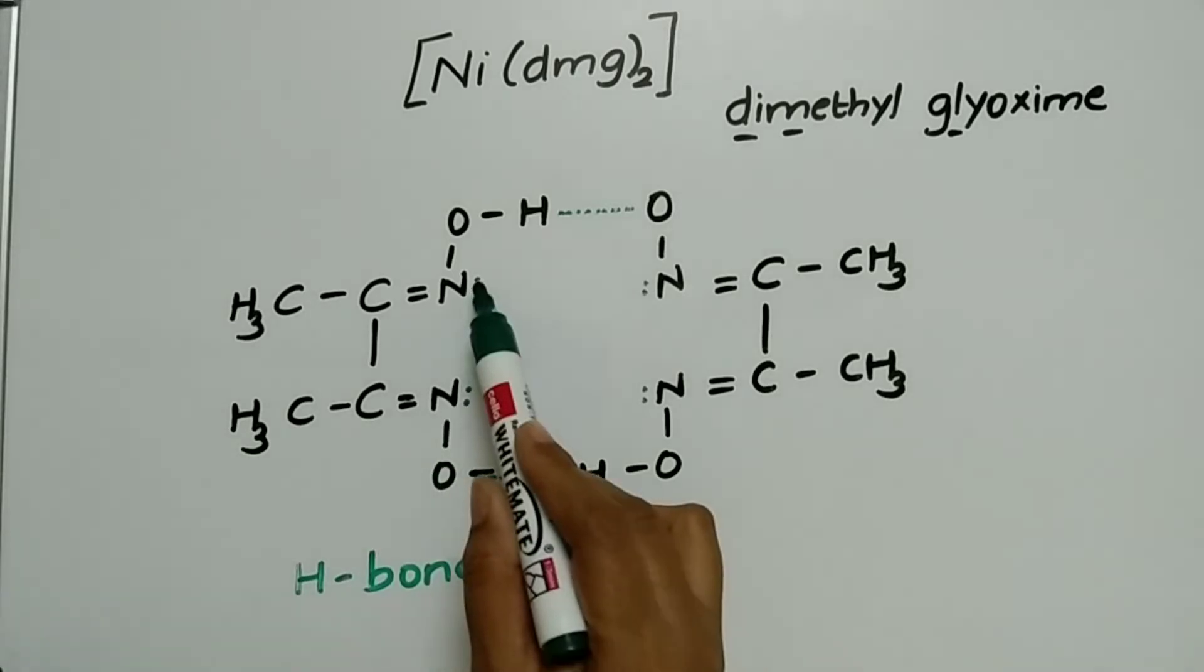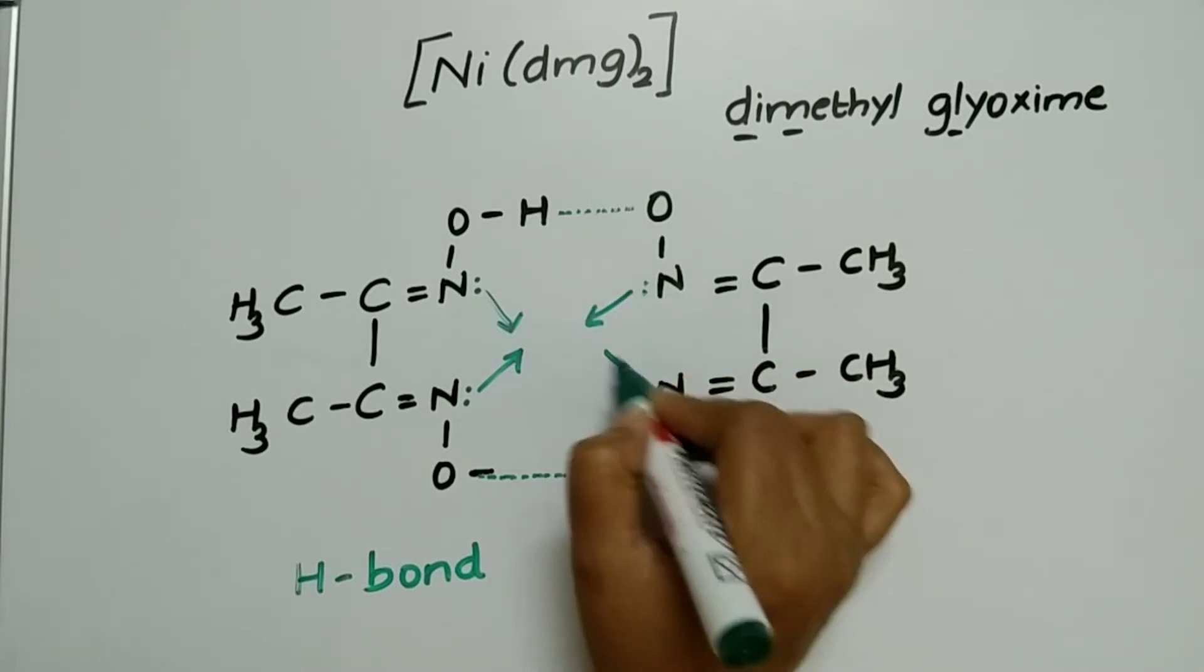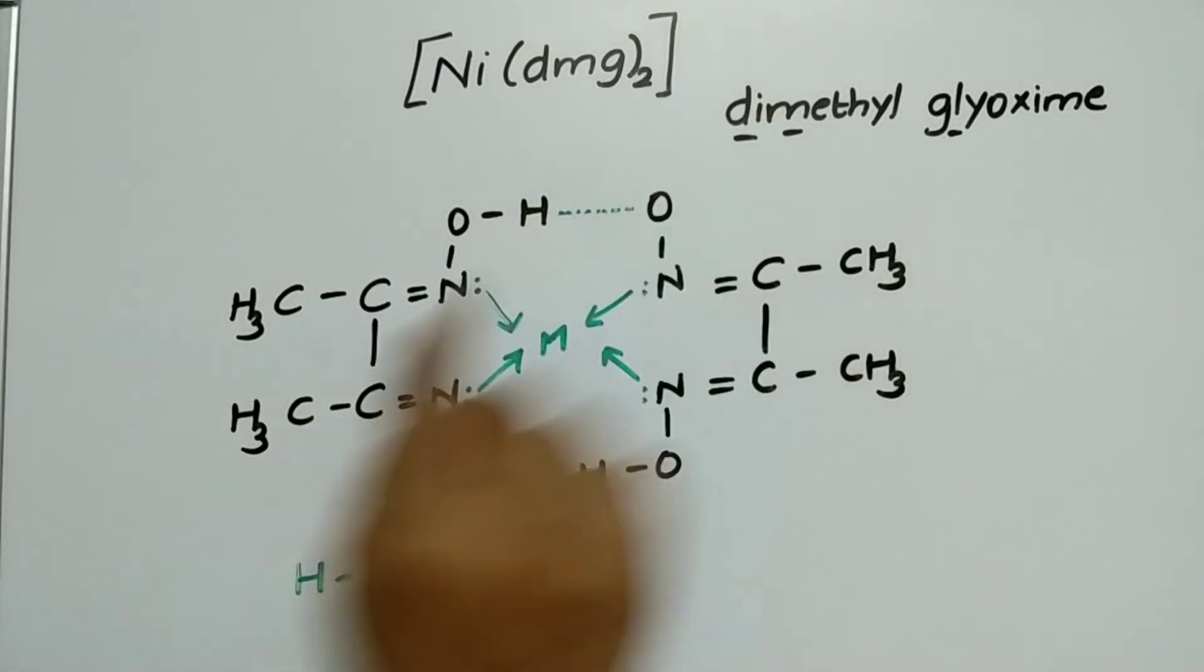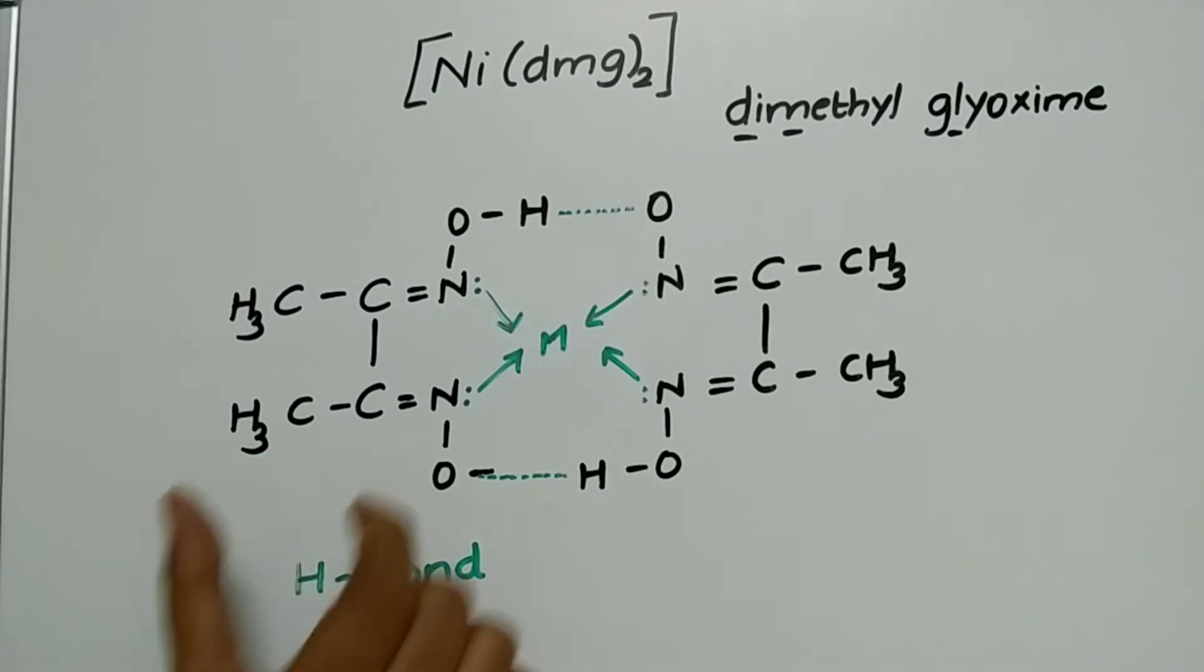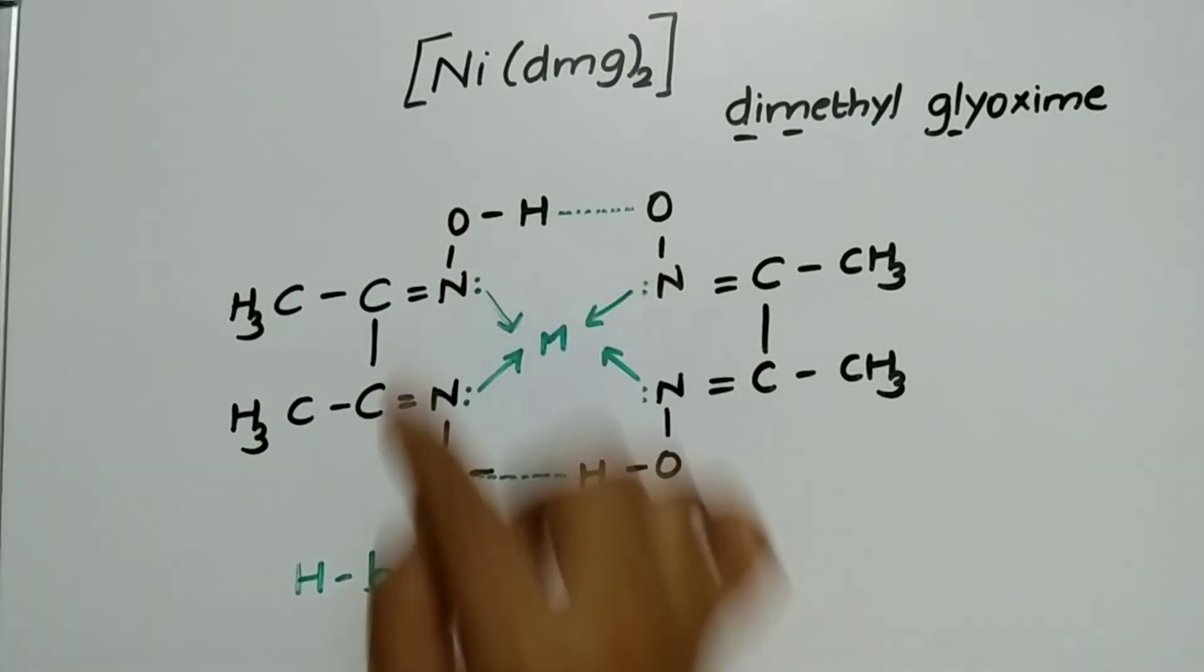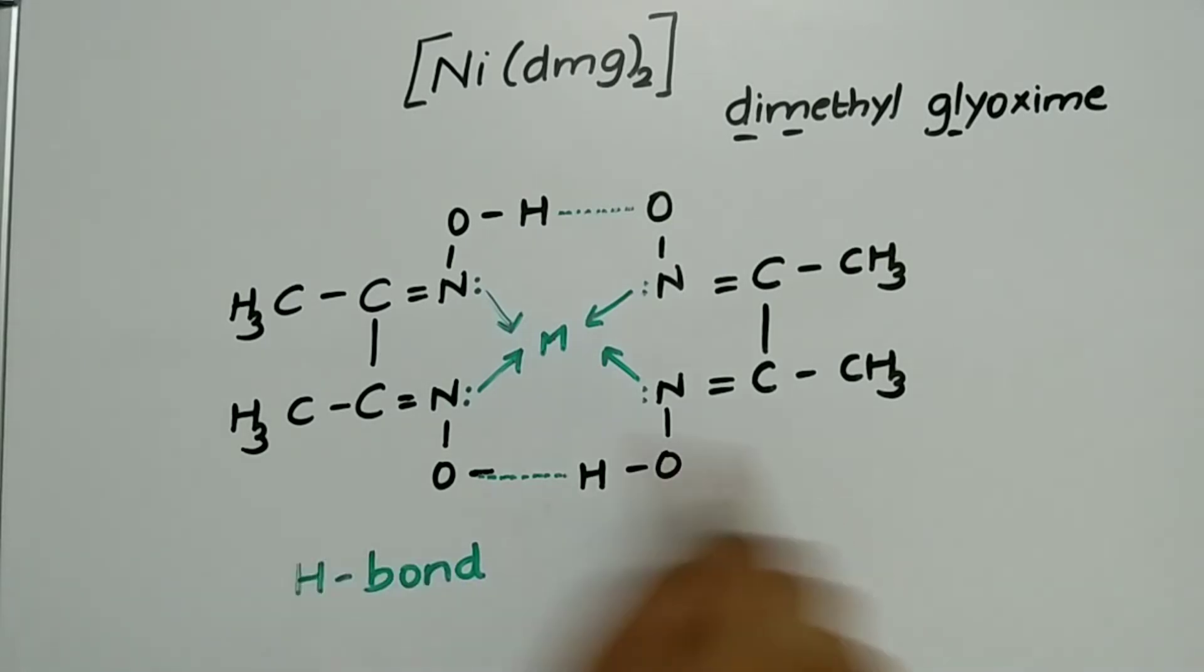Now, how many nitrogens are there? 1, 2, 3, 4 nitrogen. All the nitrogens will donate the electrons to the metal. Why did I draw this? Because just to show that one DMG can donate how many electron pairs? Two. 1 and 2, how many donor sites is it having? 2. So each DMG it has 2 donor sites. 1 and 2, see 2 donor sites giving the electrons to metal. What is there in the question? 2 DMG. So 2 DMG will give how many donor sites? 4.